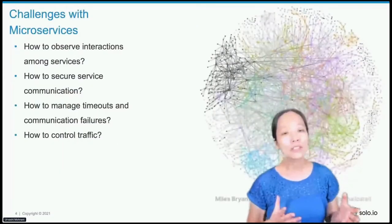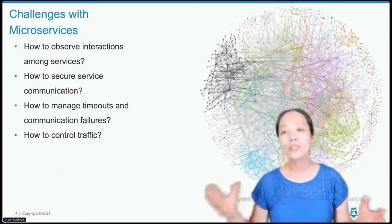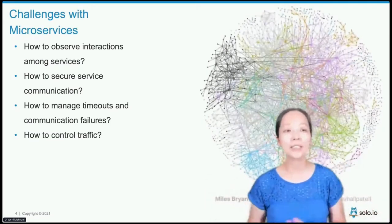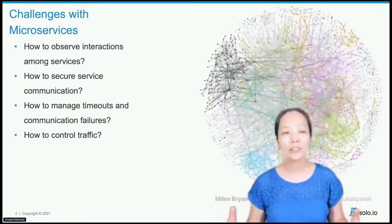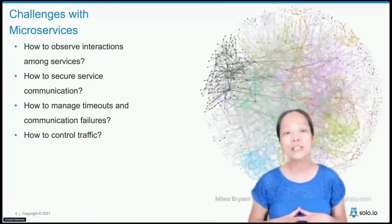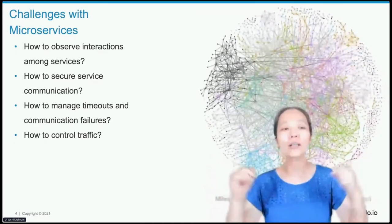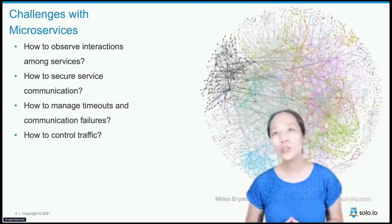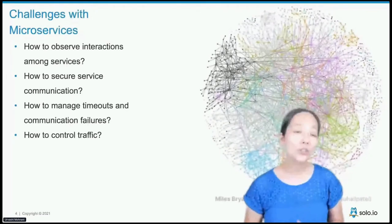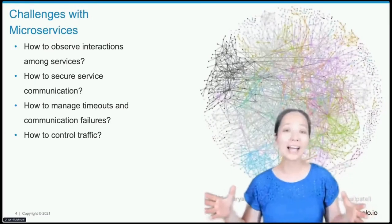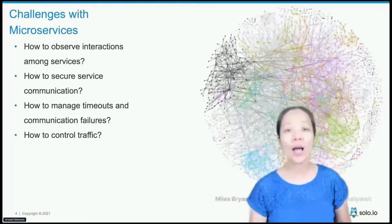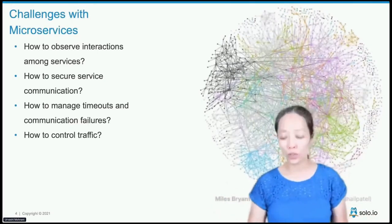It's challenging to use microservices. As services are moving to be cloud-native and Kubernetes-based, a set of new challenges arise. How do you observe interactions among your services? How do you secure the communication among the services? How do you increase the resilience of your services? And how do you control traffic as new versions come in — being able to precisely control how traffic goes out to the new version?